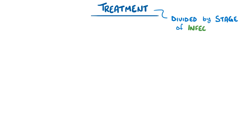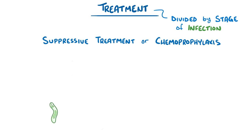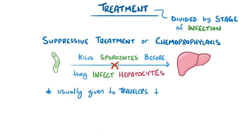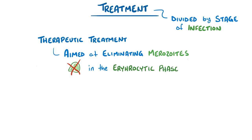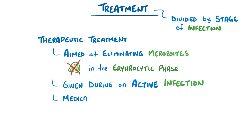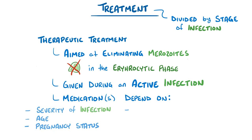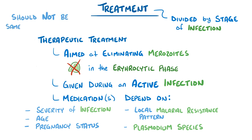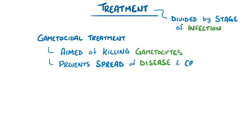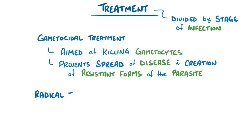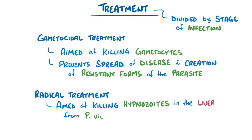Treatment for malaria is generally divided into the different stages of infection. Suppressive treatment, or chemoprophylaxis, is aimed at killing sporozoites before they infect hepatocytes, so it's usually given to travelers headed to a country with endemic malaria. Therapeutic treatment is aimed at eliminating merozoites in the erythrocytic phase during an active infection. The exact medication depends on the severity of the infection, patient age and pregnancy status, local malarial resistance patterns, and the plasmodium species. It's also important not to use the same medication for treatment that was previously used as chemoprophylaxis. Gametocytal treatment is aimed at killing gametocytes to prevent spread of disease. Lastly, radical treatment is aimed at killing hypnozoites in the liver from Plasmodium vivax and Plasmodium ovale infections.